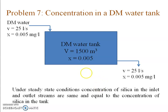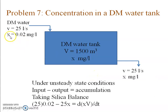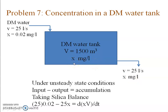At time t = 0, the concentration of silica in the inlet water increases from 0.005 mg/L to 0.02 mg/L. This will change the concentration within the tank and also the concentration in the outlet, and this will change with time. We need to calculate how much time it will take for the concentration to change from 0.005 — the steady state value — to 0.01 mg per liter. We will write the unsteady state balance equation: input minus output equals accumulation, taking a silica balance.